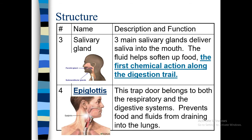The epiglottis is a door that belongs to both the respiratory system and the digestive system. It is the opening to both. When you open your mouth to eat, the epiglottis closes the respiratory system so you will not inhale through the mouth — you will inhale through the nose. It also prevents food and fluid from draining into the lungs.